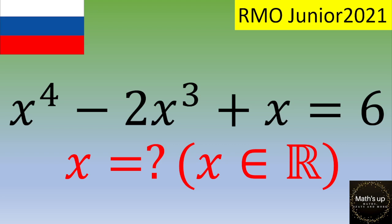Hello and welcome. In this video, we have an exercise from the 2021 Junior Math Olympiad. The equation is x⁴ - 2x³ + x = 6. What is the value of x if x is a real number? If you want to give it a try, please pause the video; otherwise, let's see the solution.